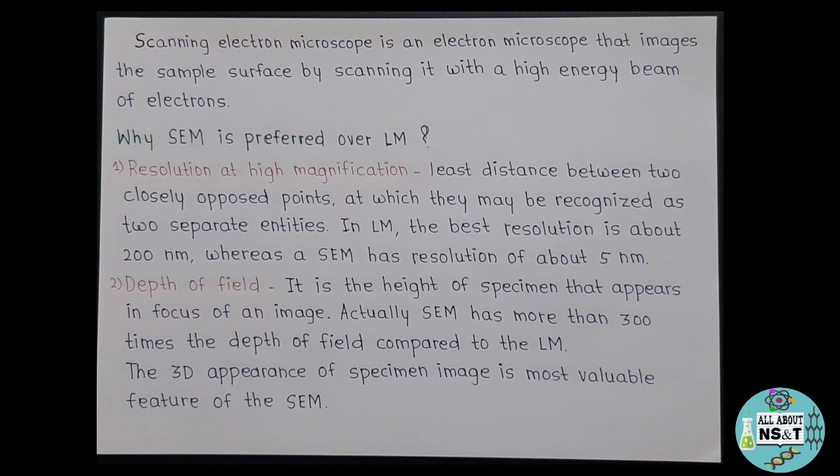Now let's understand a bit more details about each of them. Firstly, talking about resolution at high magnification, what does this resolution mean? So resolution can be defined as the least distance between two closely opposed points at which they may be recognized as two separate entities. In case of light microscope, the best resolution is about 200 nanometers, whereas a SEM has resolution of about 5 nanometers.